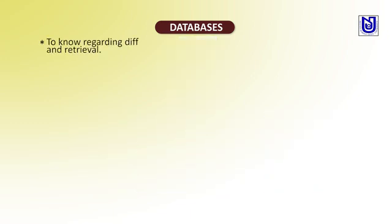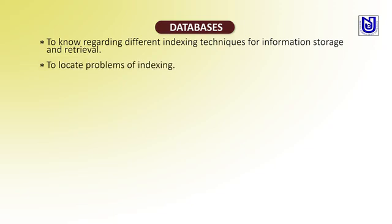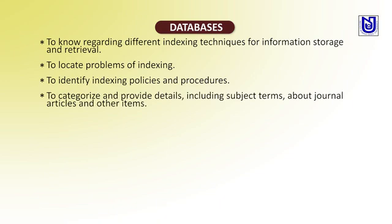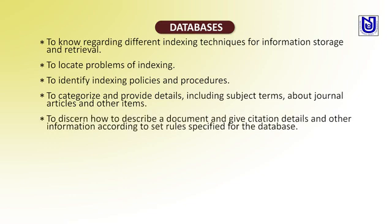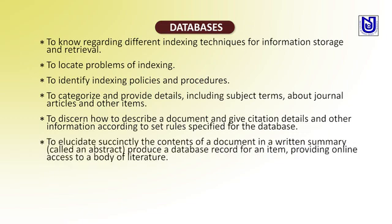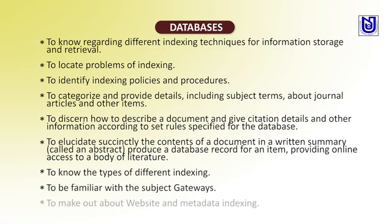After going through this, the objectives of this module are: to know regarding different indexing techniques of information storage and retrieval, to locate problems of indexing, to identify indexing policies and procedures, to categorize and provide details including subject terms about journal articles and other items, and to discern how to describe a document and give citation details and other information according to the set rules specified for the databases. To produce a written summary called an abstract, to provide a databases record for an item providing online access to a body of literature, to know the types of different indexing, and to be familiar with subject gateways, websites, and metadata indexing.